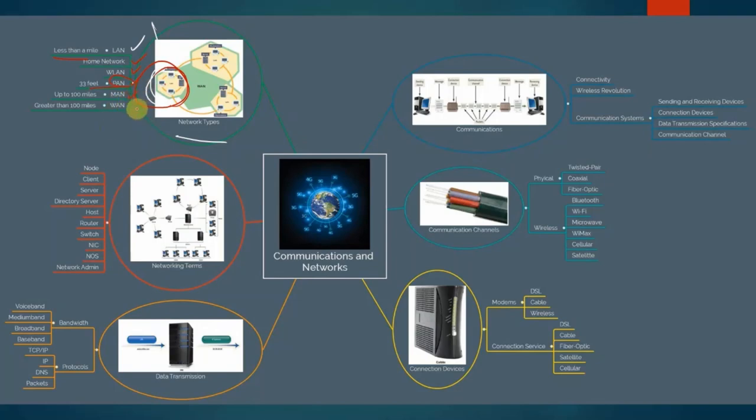There's also a MAN. This is a metropolitan area network, which can span a distance up to 100 miles. Typically, this is not within a single organization, but is owned by typically a group of organizations that work together. And then we also have a wide area network, which is greater than 100 miles in which all these local area networks can provide a wide area network where the Internet is our largest wide area network.